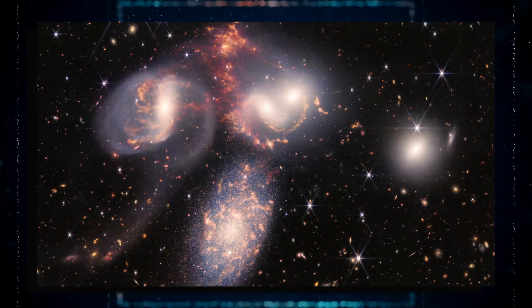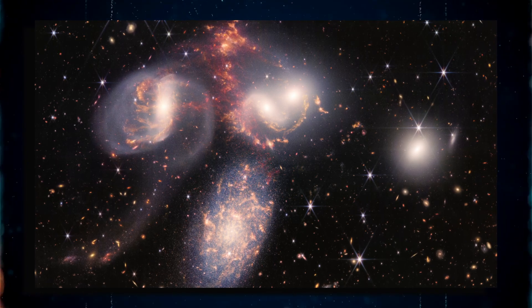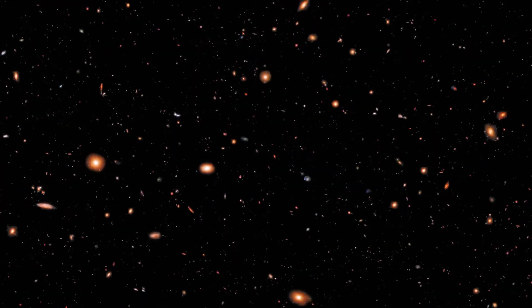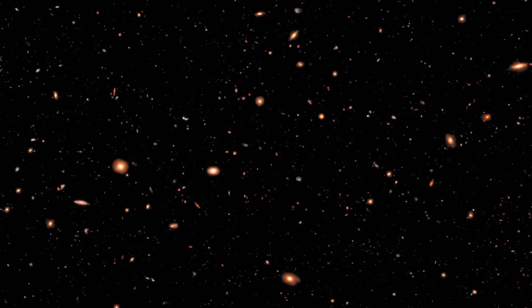The trouble with the images is that they show numerous galaxies that are shockingly smooth, small and old. But why do smooth, small and old galaxies contradict the Big Bang Theory?